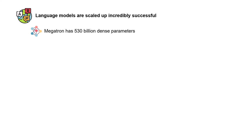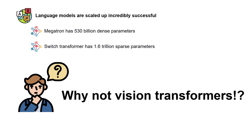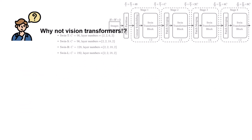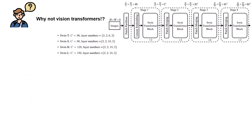Language models are scaled up incredibly successfully. For example, Megatron has 530 billion dense parameters, or Switch Transformer has 1.6 trillion sparse parameters, which is a lot. But you might wonder why can't we just do the same thing for Vision Transformers? And to answer this question, we need to look at the architecture of the Swin Transformer.